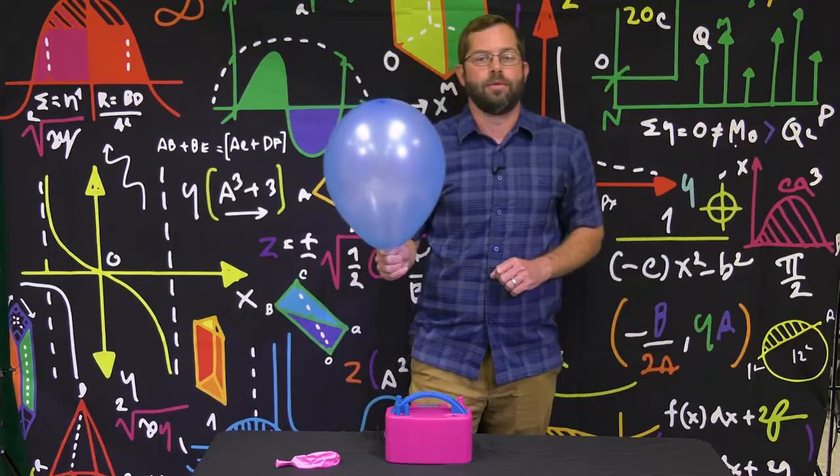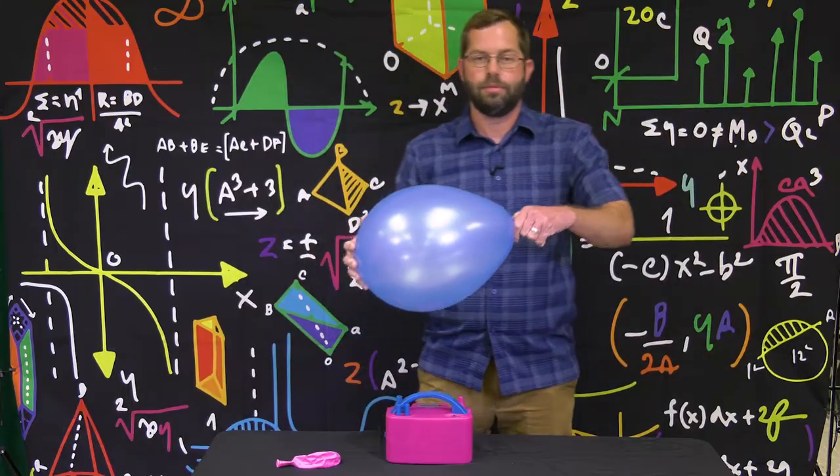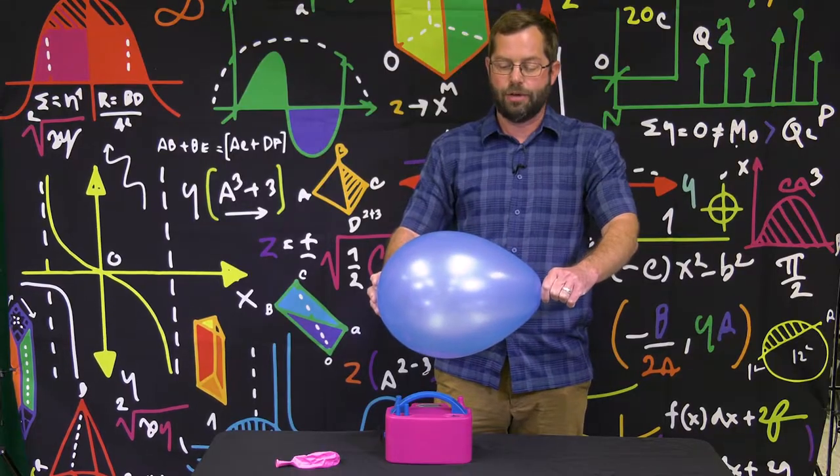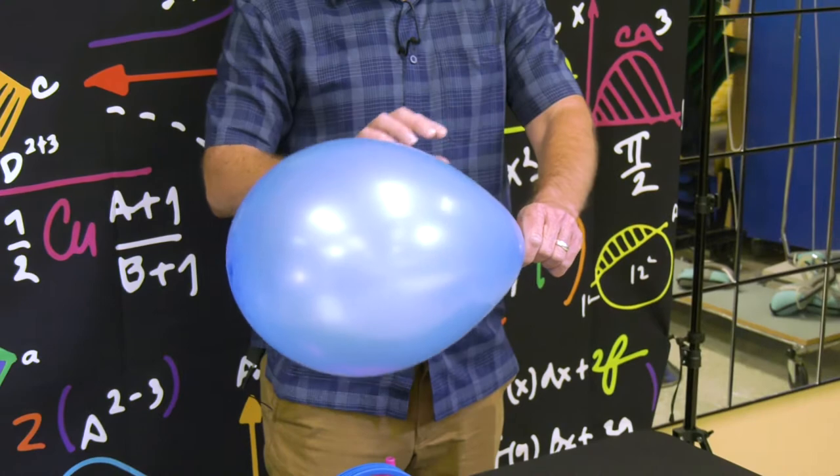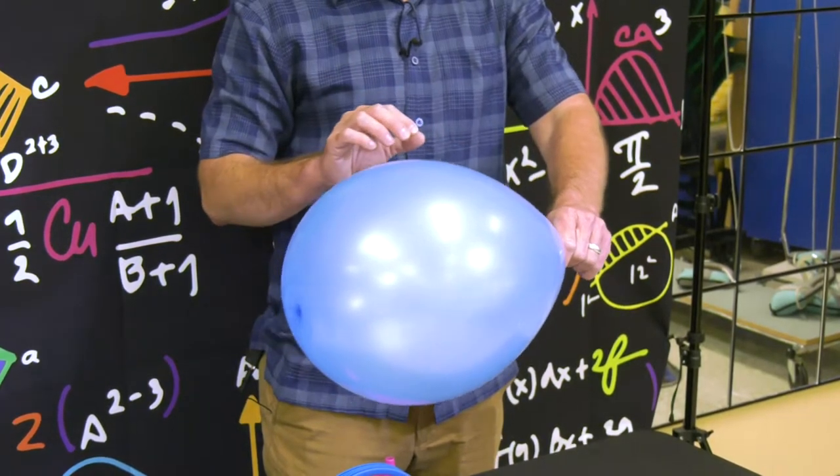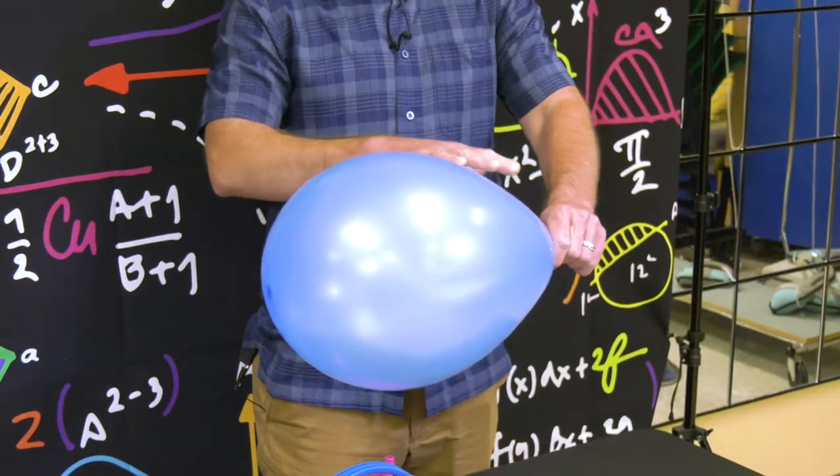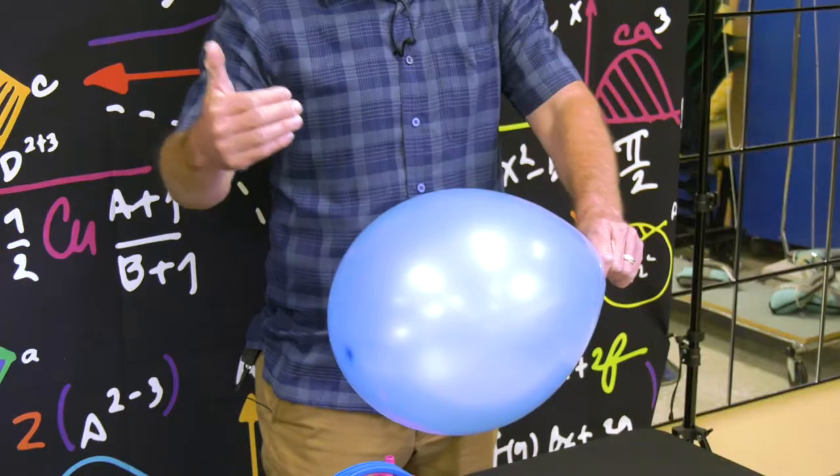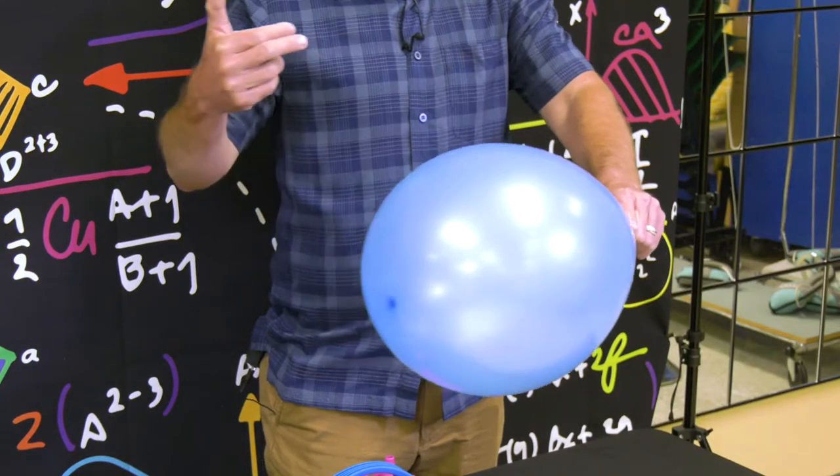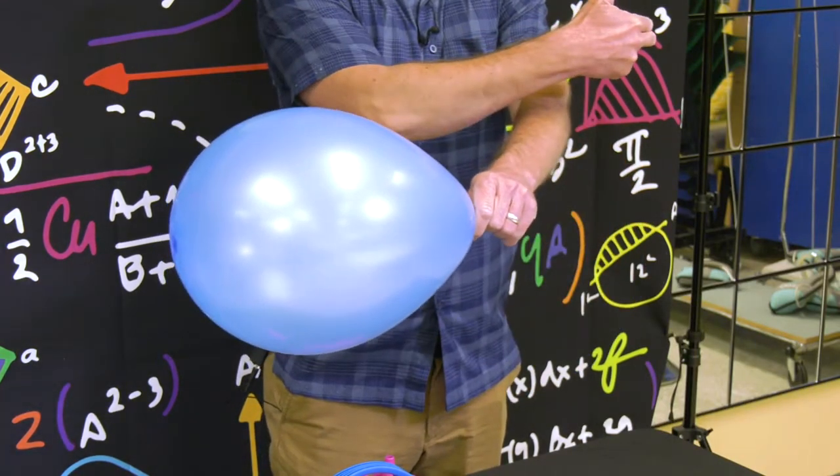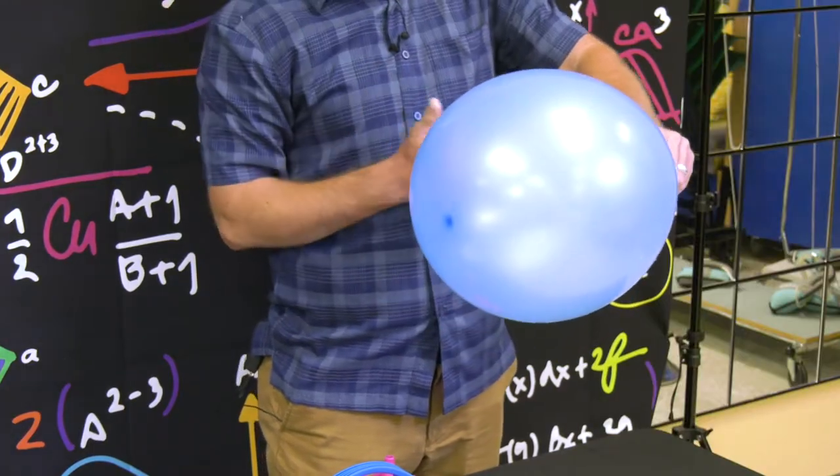But let's think about it. With our balloon rockets, we had it positioned like this, sideways, and what happened? When I let go of the balloon, what happened? It allowed all of that air to quickly rush out of the opening on this side, and as the air quickly rushed out in this direction, the balloon rocket moved forward in the opposite direction.